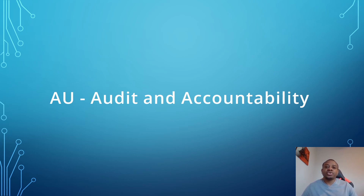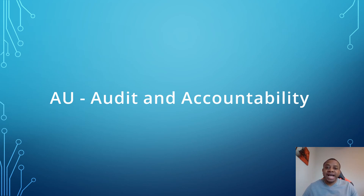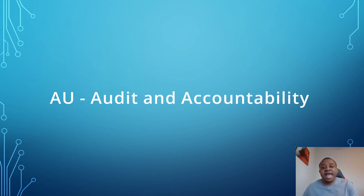The audit and accountability control refers to the process of creating, protecting, and retaining information system audit records for the purpose of monitoring, analysing, and reporting on lawful, unauthorised, or inappropriate activities. It's also the process of holding a user accountable for their actions. Simply put, audit and accountability is the process of recording a user's activity, reviewing that activity, and holding the user accountable.